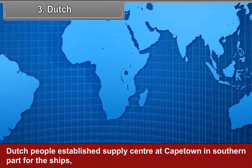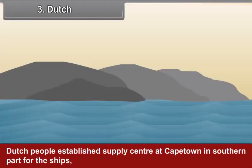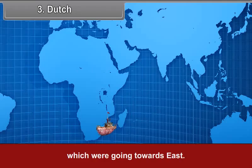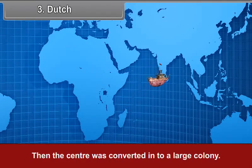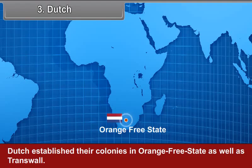Third, the Dutch. Dutch people established a supply center at Cape Town in the southern part for ships going towards the east. Then the center was converted into a large colony. Dutch established their colonies in Orange Free State as well as Transvaal.